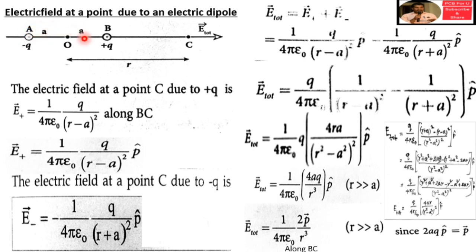Electric field at a point due to an electric dipole. Consider this diagram: EB is the electric dipole, with the electric dipole center marked. The negative charge is below the positive charge, and the center of the dipole is at a single point on R. We have to find out the electric field at point C.